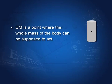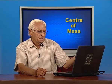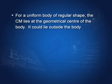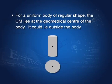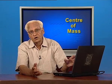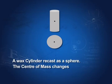Let me now sum up. The centre of mass is a point where the whole mass of the body can be supposed to act. It is a function of mass distribution — not a fixed point. For a uniform body of regular shape, the centre of mass lies at the geometrical centre. It could lie outside the body, as in the case of a ring. For an irregular body, we do not know where it would lie. As an example, wax moulded into a cylinder was melted and reshaped into a sphere, and the centre of mass changed — showing that the centre of mass depends on mass distribution. In the next lecture, we take up the very important topic of angular momentum and its conservation.